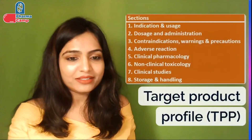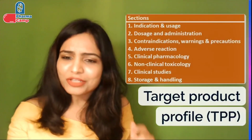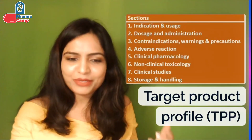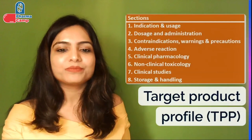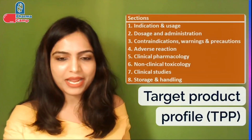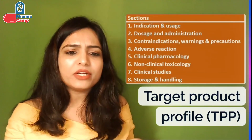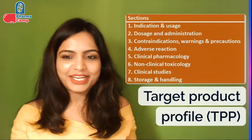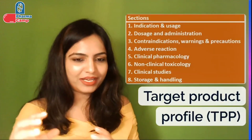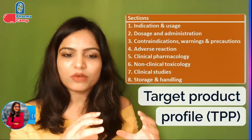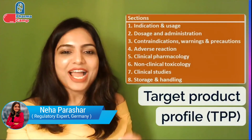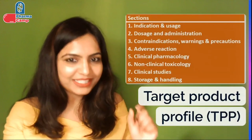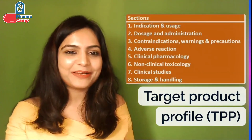One document which is very important — I also mentioned this name in my previous videos — is called the target product profile, or TPP. This is also prepared during the planning phase. It is a very important document, as the name itself indicates: how will the profile of our target product look like? In my next videos, I will be talking about this topic — TPP — specifically in detail.